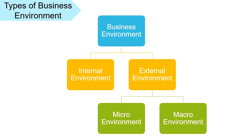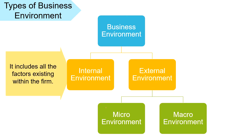Business environment can be internal environment or external environment. The internal environment of business includes all the factors existing within the firm. These factors are controllable in nature. For example, the company can alter its policies and programs. However, there are certain factors on which organizations do not have any control, like its strengths and weaknesses. The internal environment of the business can affect and be affected with the choices, activities and decisions of the organization.